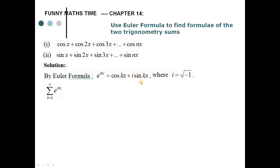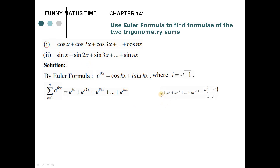I take the summation of this Euler identity on both sides. The left-hand side sum from k equals 1 to n of e to the power i·kx expands as e^(ix) plus e^(i·2x) plus e^(i·3x) and so on to e^(i·nx), which is actually a geometric sequence. For a geometric sequence, we have the formula: a plus ar plus ar² plus ... plus ar^(n-1) equals a times (1 minus r^n) over (1 minus r).